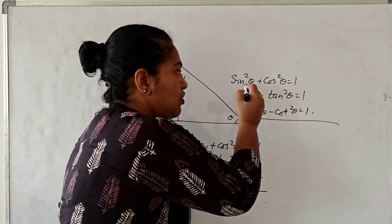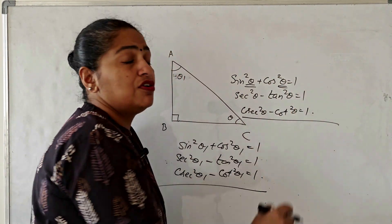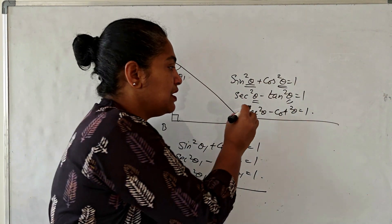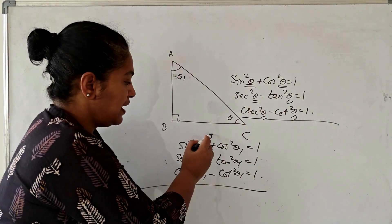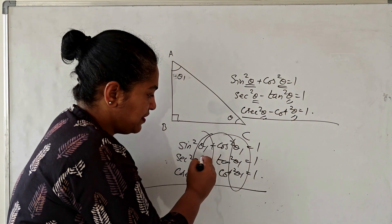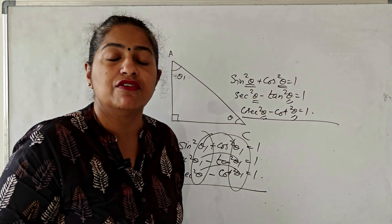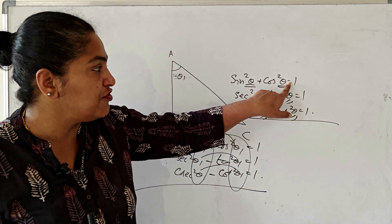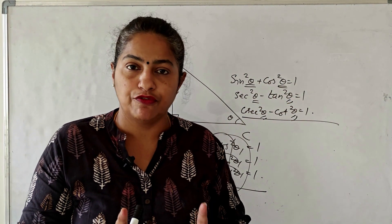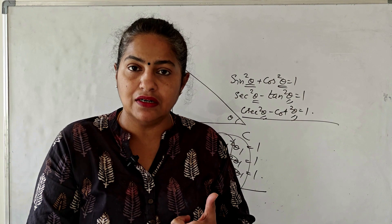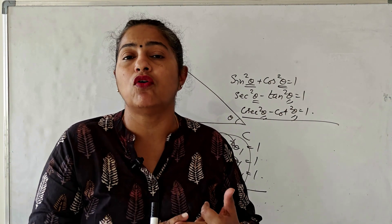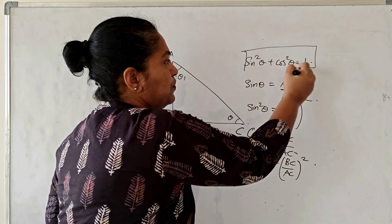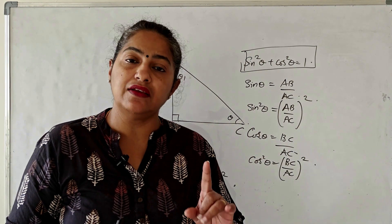What you understand from this is that whatever angle is mentioned in one term should be mentioned in the other term as well — they should always carry the same angle. Now we will learn how to derive each of these identities and also the different manipulations. Let us first prove sin²θ + cos²θ = 1.